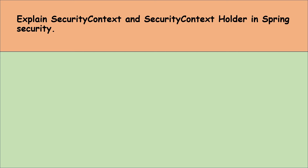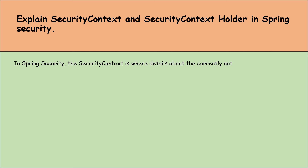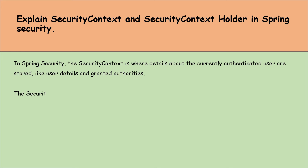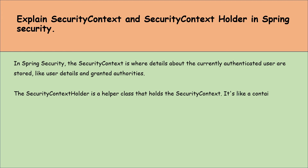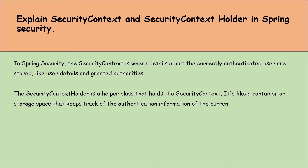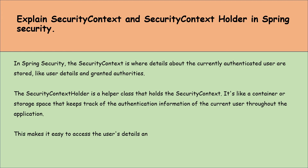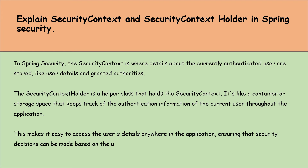Explain SecurityContext and SecurityContextHolder in Spring Security. The SecurityContext is where details about the currently authenticated user are stored, such as user details and granted authorities. The SecurityContextHolder is a helper class that holds the SecurityContext — like a container that keeps track of the authentication information of the current user throughout the application. This makes it easy to access the user's details anywhere in the application, ensuring security decisions can be made based on the user's authentication status and roles.